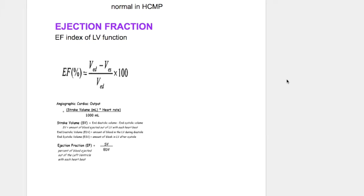What is ejection fraction, what is its clinical significance, and how is it different from stroke volume? Ejection fraction is an important index of left ventricular function in systolic heart failure. It helps differentiate systolic heart failure from diastolic heart failure because in systolic heart failure walls are thin and powerless and blood cannot be ejected out. In diastolic heart failure the cardiac walls are thick and ejection fraction is normal. It is important to differentiate between the two conditions because their treatments are very different from each other.